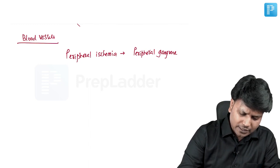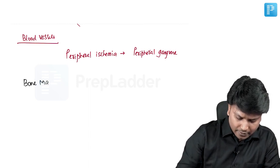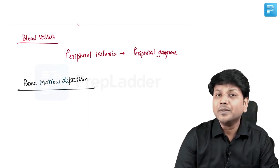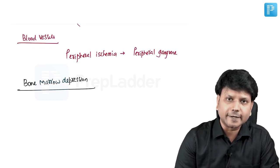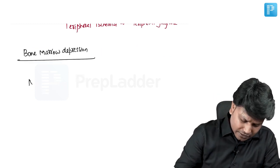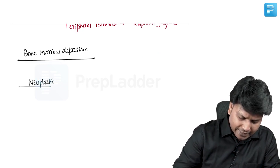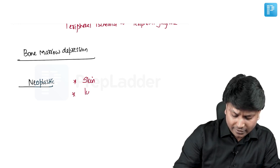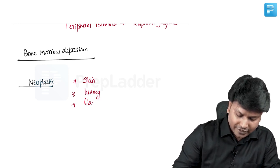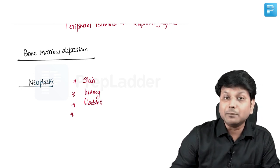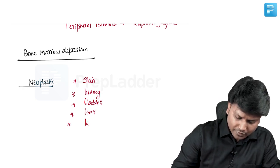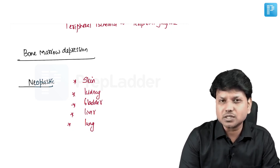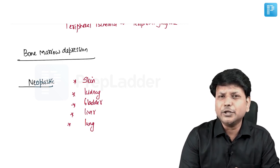In the liver, arsenic increases the incidence of angiosarcoma. In skin, it increases basal cell carcinoma and squamous cell carcinoma. Arsenic gets deposited in bone, hair, nails, and skin. The most reliable diagnosis is by 24-hour urinary arsenic level — more than 50 micrograms per day indicates arsenic poisoning. Ensure the patient has not eaten seafood for the previous 24 hours before testing, as seafood contains arsenobetaine and arsenocholine.